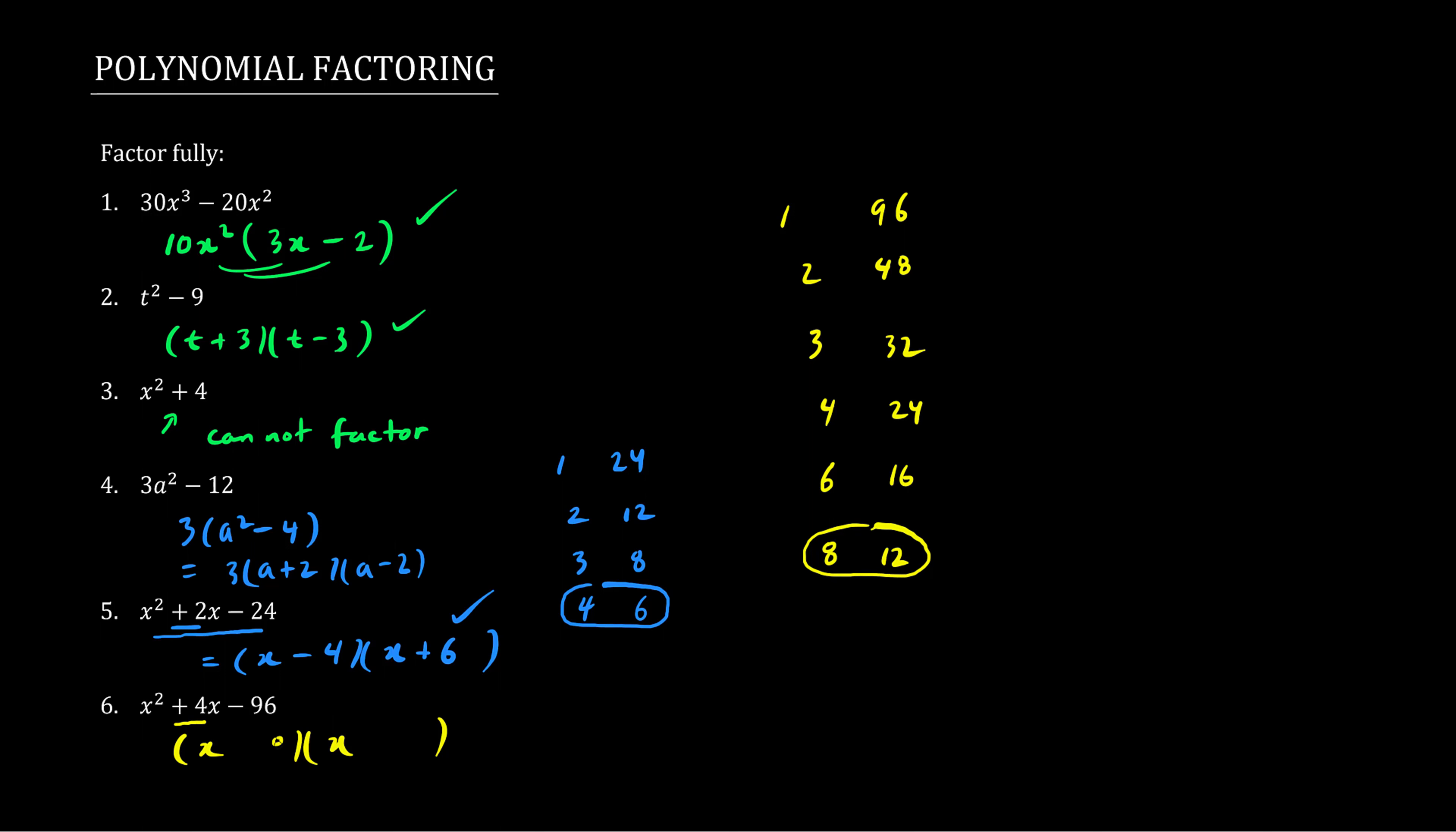Let's try 8 and 12. 8 times 12 is 96. And the goal is to make positive 4. So let's put the plus sign here and a minus sign here. And we verify, indeed, the sum is positive 4 and the product is negative 96. So we found it.